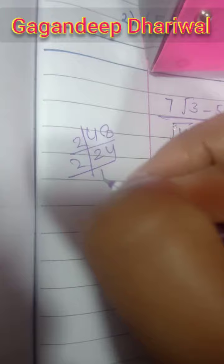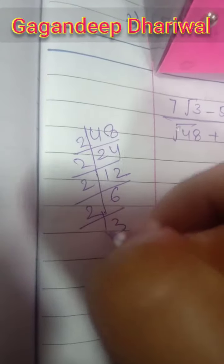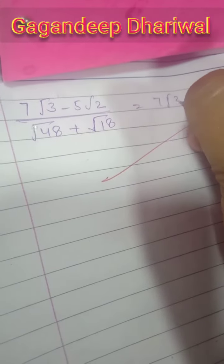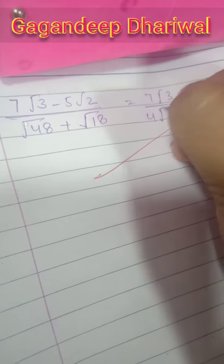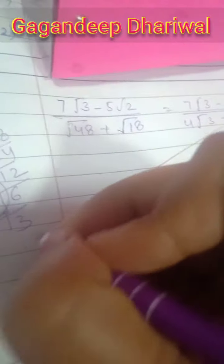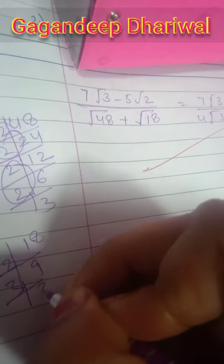√48: make a factorization of 48. You will get a pair of 2s, so you can write it as 4√3. Now 18: make a factorization of it. This is 2 times 9, 3 times 3 is 9, and 3 times 1 is 3, so that is 3√2. In place of 18 we can write 3√2.